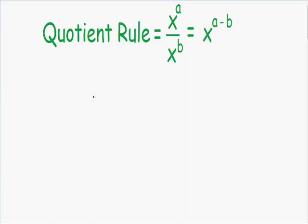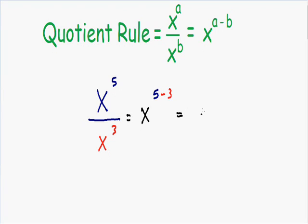Let's go over an example. Let's say we have x to the fifth being divided by x to the third. We have a common base of x, and since it's being divided, we subtract the exponents: five minus three, which is a positive two. So x to the fifth over x cubed can be simplified as x squared.